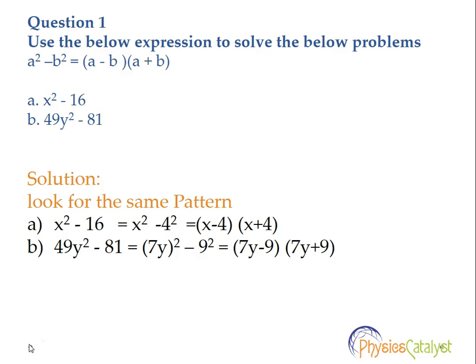Now take a look at part two. Part two is 49y squared minus 81, which can be written as 7y squared minus 9 squared. So a is 7y and b is 9, and it can be written as 7y minus 9 into 7y plus 9.